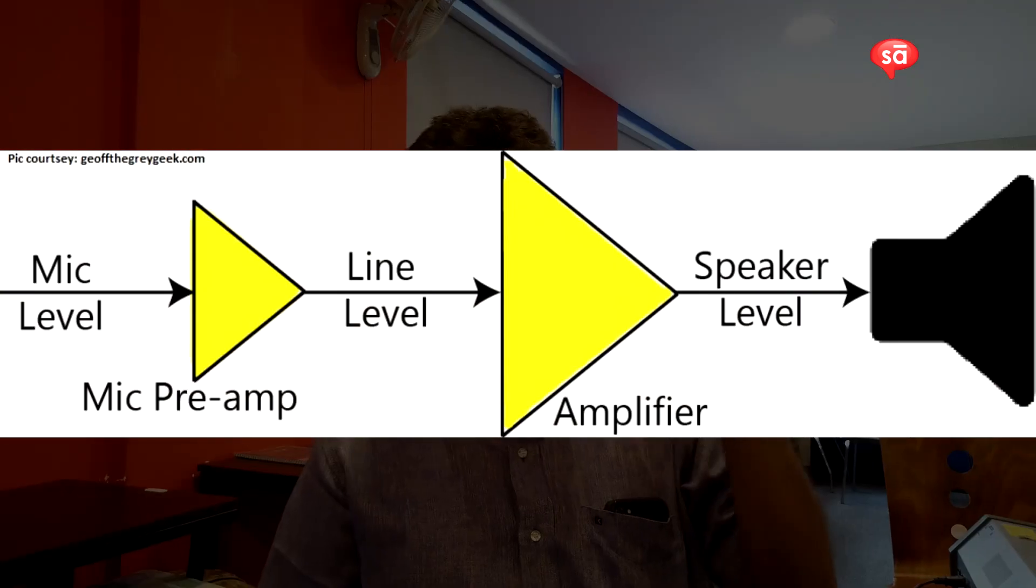One is the microphone level, which is the most feeble level. The microphone level is supposed to be the least powerful level in audio signal. The next comes the instrument level.